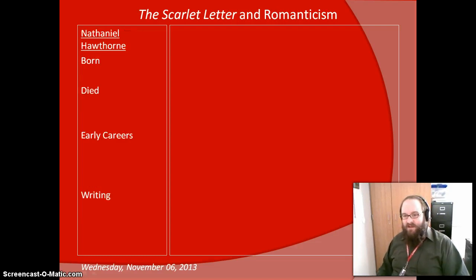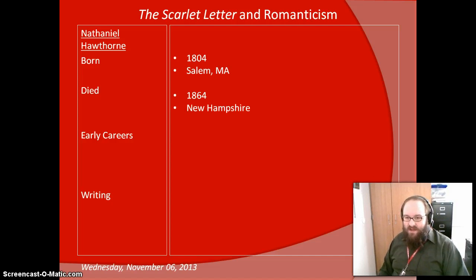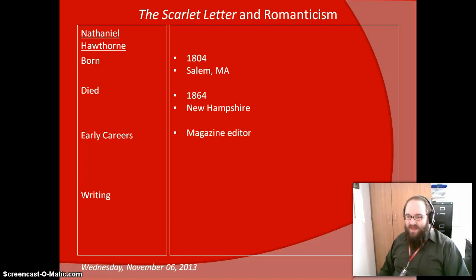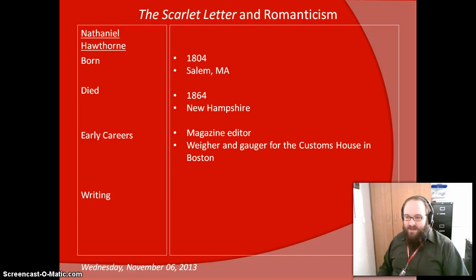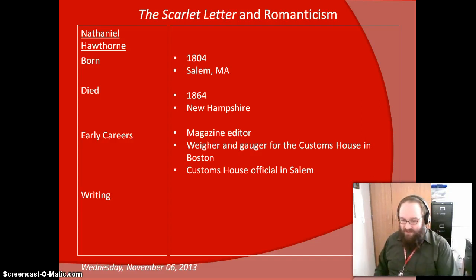Let's talk about Hawthorne, the author of Scarlet Letter. Hawthorne was born in 1804 in Salem, Massachusetts — that was his hometown. He died in 1864 on his way to New Hampshire. He was friends with President Pierce and they were on a trip together when Hawthorne's health was failing him, and he died before he got there. In some of his early career, he managed a magazine — not a very widely circulated one. He did government work; he was a weigher-gauger for the Custom House in Boston, a federally appointed Custom House where they take in imported goods and check them against manifests to make sure owners are paying taxes. Eventually he was appointed as a much higher-up Customs House official in Salem — one of the head guys of the Customs House in the Port of Salem.